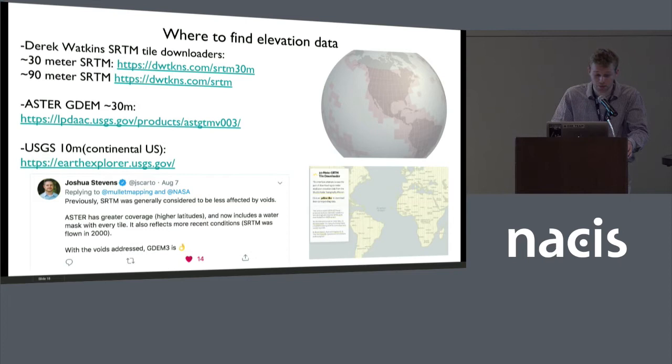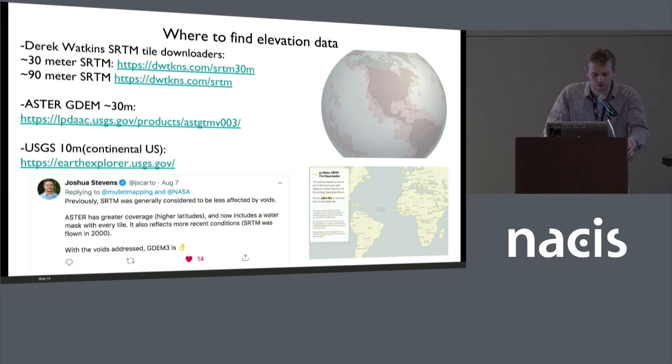These are a couple spots I find elevation data. Derek Watkins has a great interface for grabbing NASA's SRTM tiles. Aster is another one that has global resolution. And then Earth Explorer for U.S. data. Josh Stevens was kind enough to explain the differences between Aster and SRTM — they're about the same resolution, but Aster is better in some areas of the world where there are voids in SRTM.